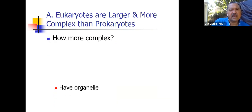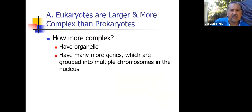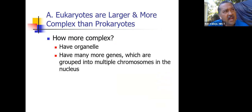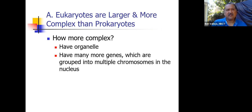Eukaryotes are larger and more complex. In comparison to bacteria, eukaryotes have organelles. Instead of having one circular chromosome like bacteria, they have many chromosomes. We as humans have 46 chromosomes in 23 different pairs, and many more genes — 25,000 to 30,000 different genes as part of our genome. Bacteria have much fewer — some of them have just a thousand genes or so.